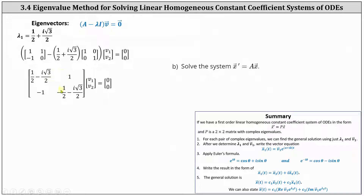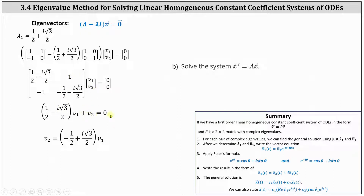This represents a dependent system with an infinite number of solutions, so we can determine an eigenvector using just one equation. The first equation is one half minus i square root three times v one plus one times v two equals zero. Solving for v two, we get v two equals negative one half plus i square root three divided by two times v one. Letting v one equal negative two so that v two has no fractions, then v two equals positive one minus i square root three. This is a corresponding eigenvector for lambda sub one.